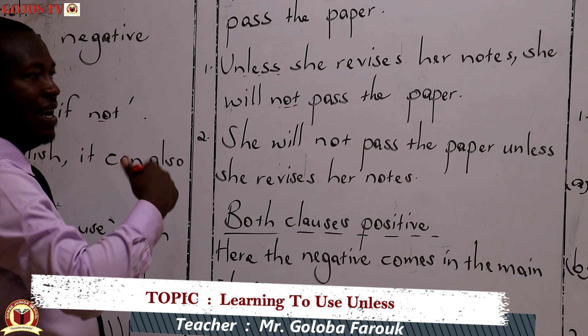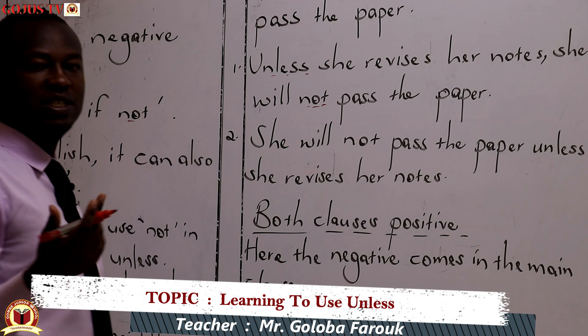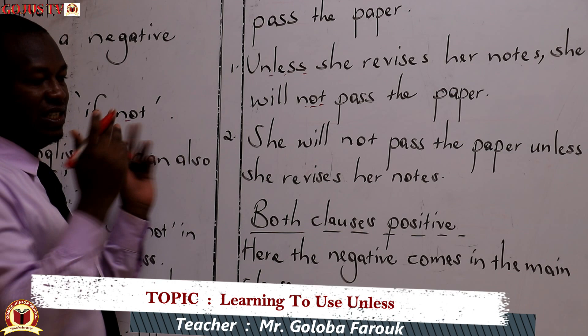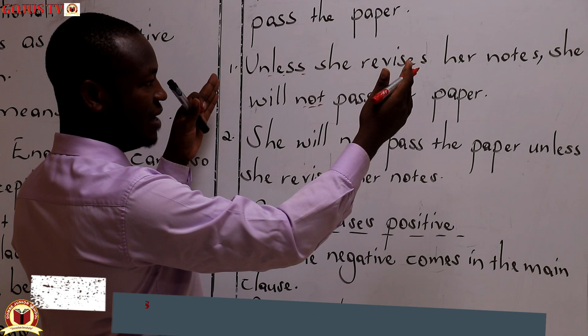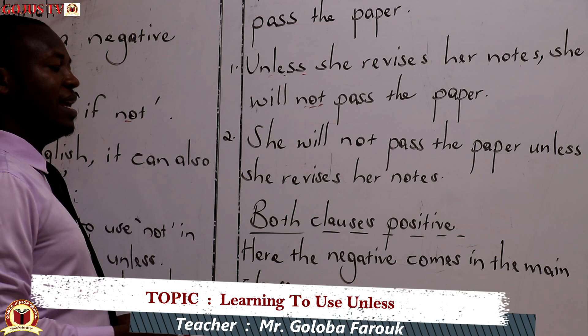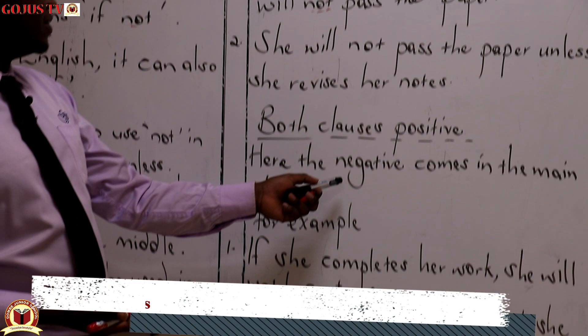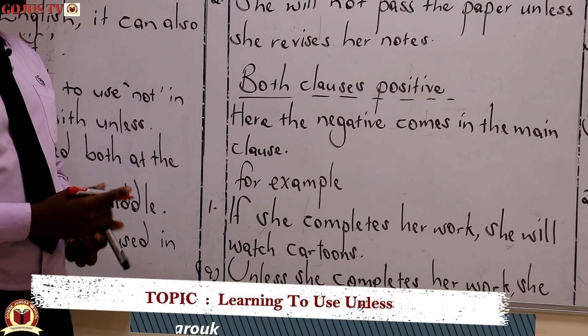We go ahead to break down positivity and negativity into clauses. What happens if a certain clause is positive? What happens if a clause is negative? We have the unless clause and the main clause. If both the unless clause and the main clause are positive, the negative comes in the main clause — remember, we don't put a negative in the same clause with 'unless'.